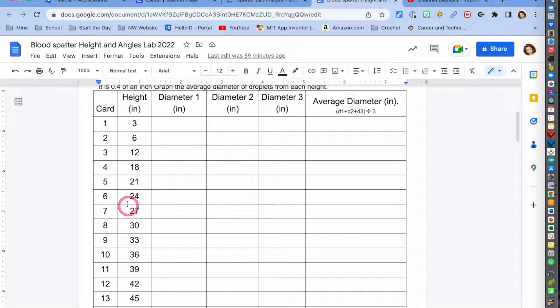So on card one you're going to set your height to 3 inches and you're going to drop three drops onto your note card.